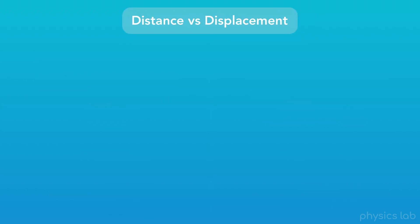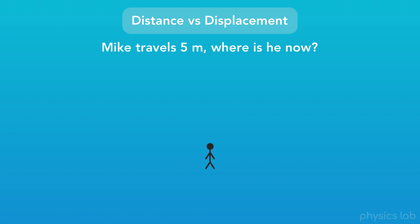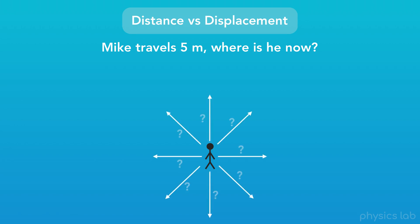Let's take a look at the difference between distance and displacement. Here's our friend Mike. If Mike starts here and he travels 5 meters, where is he now? Well, it's not possible for us to know, because we weren't given a direction. We were given a distance, which is a scalar.